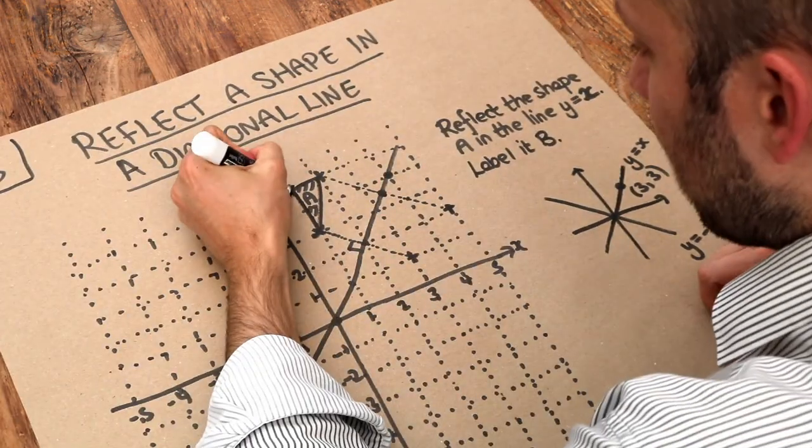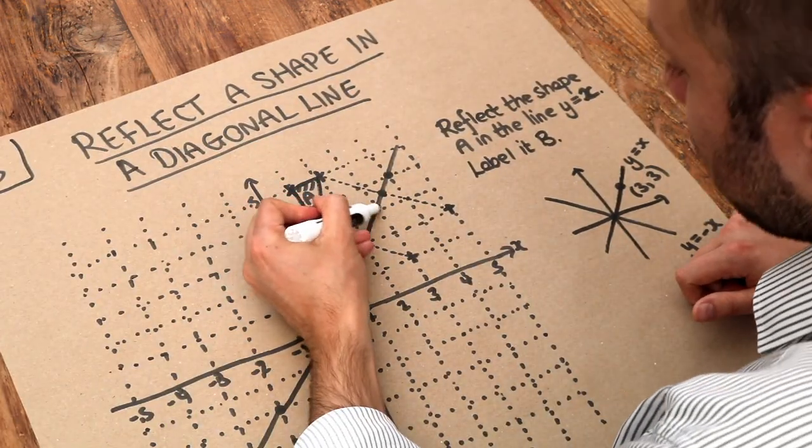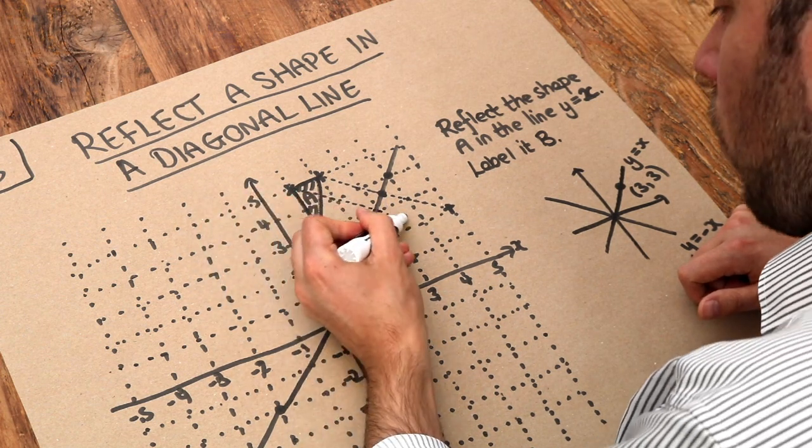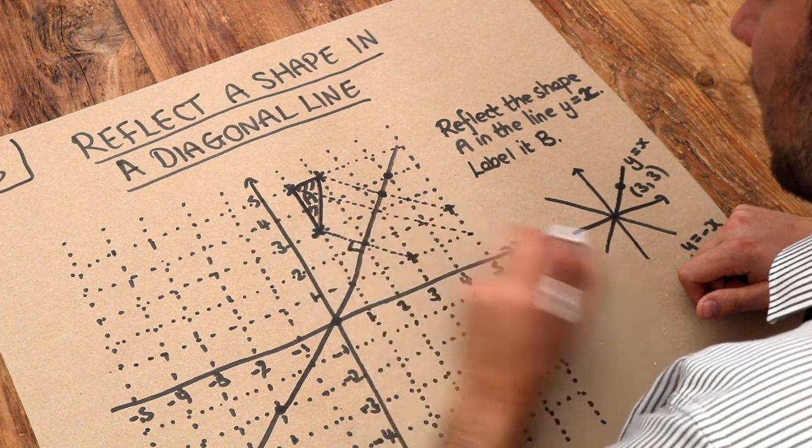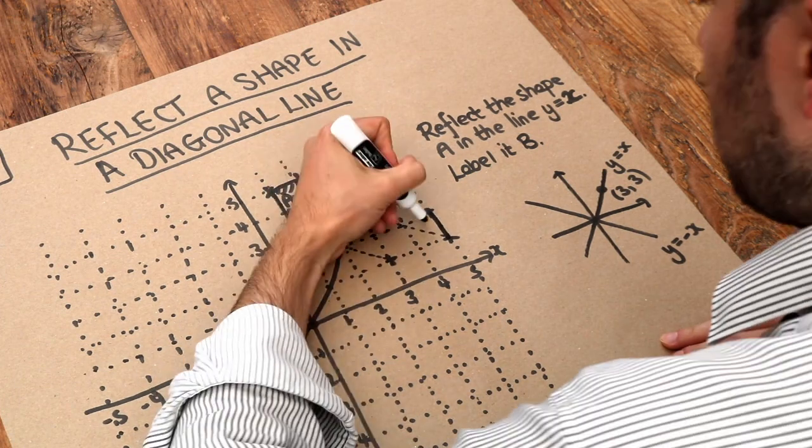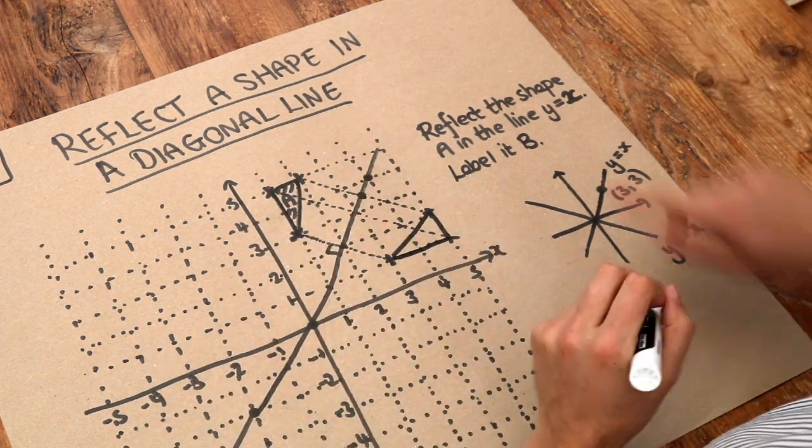And the final point is this one here. So we go directly towards our reflection. One square, two squares diagonally, and then one square, two squares diagonally the same distance and we end up here. And then we just have to join these up and we get our shape B.